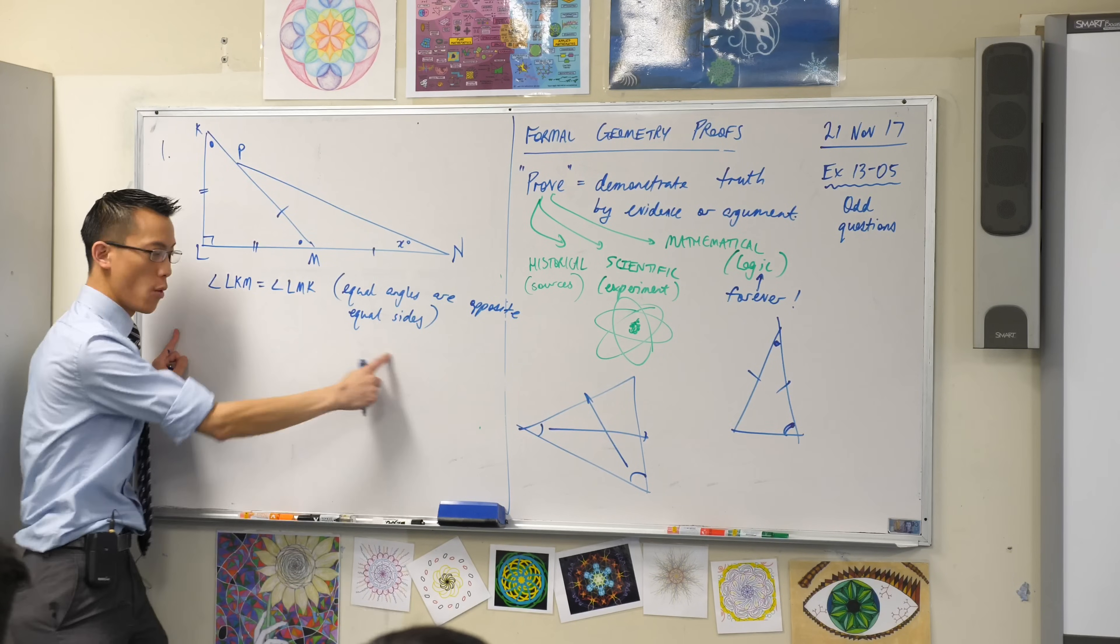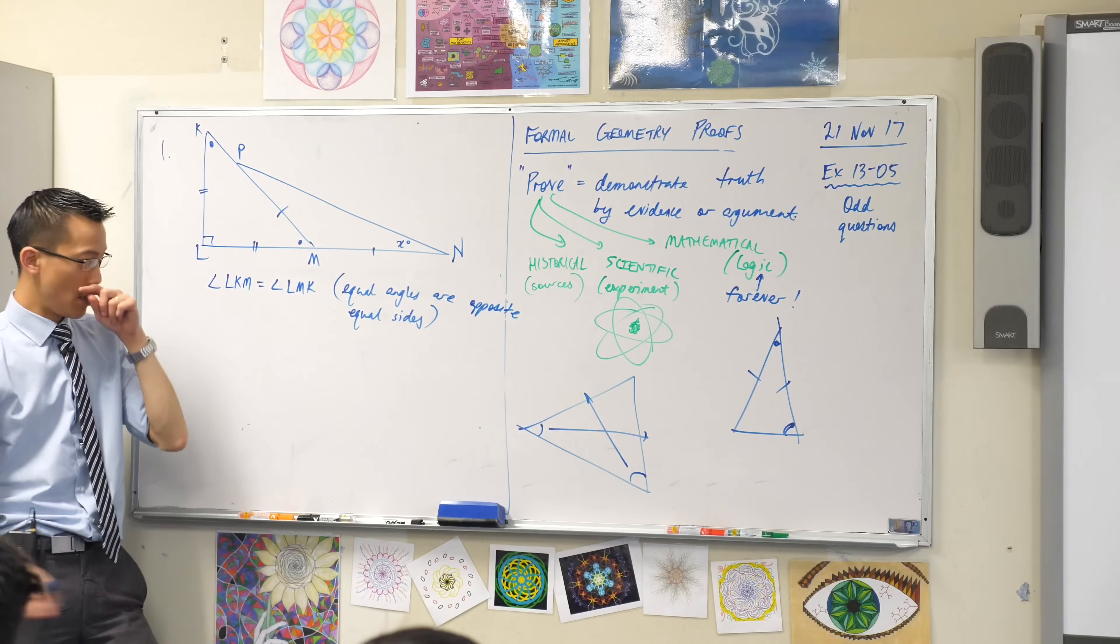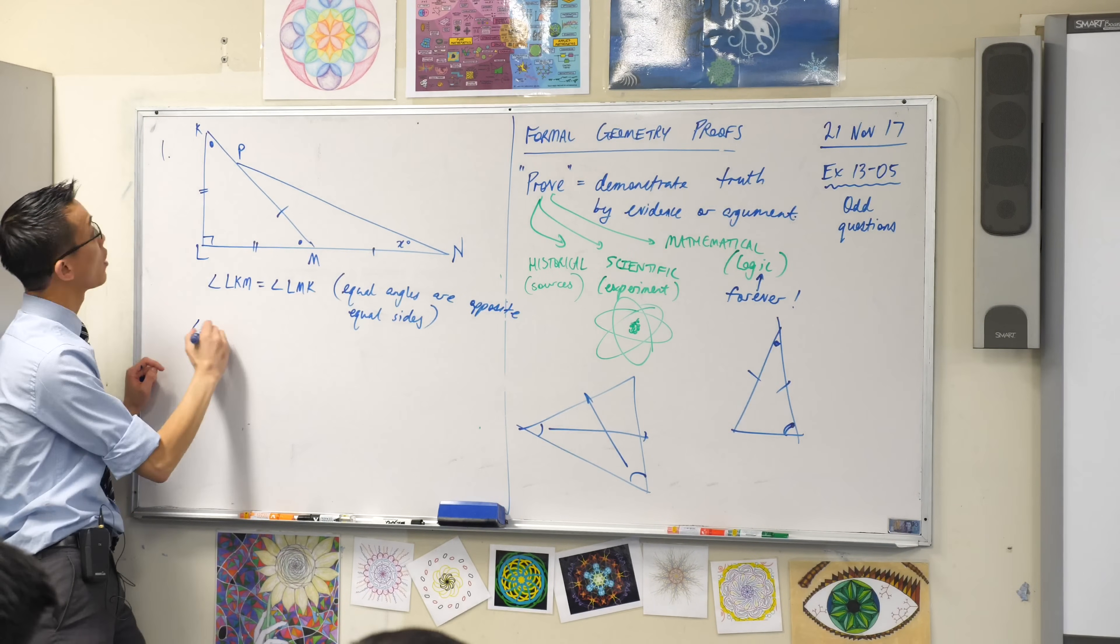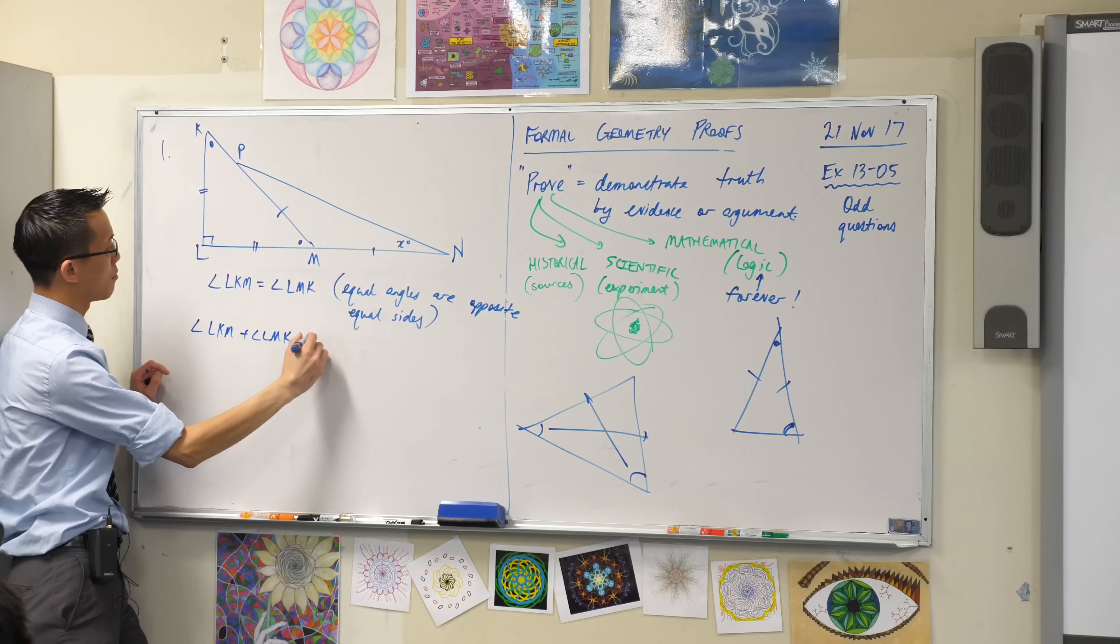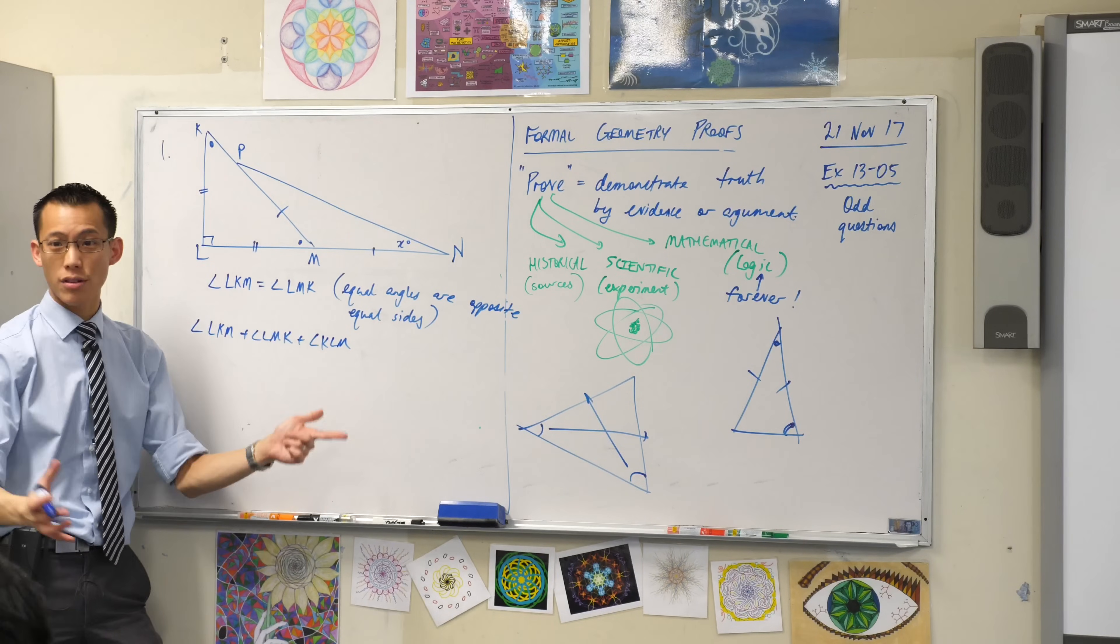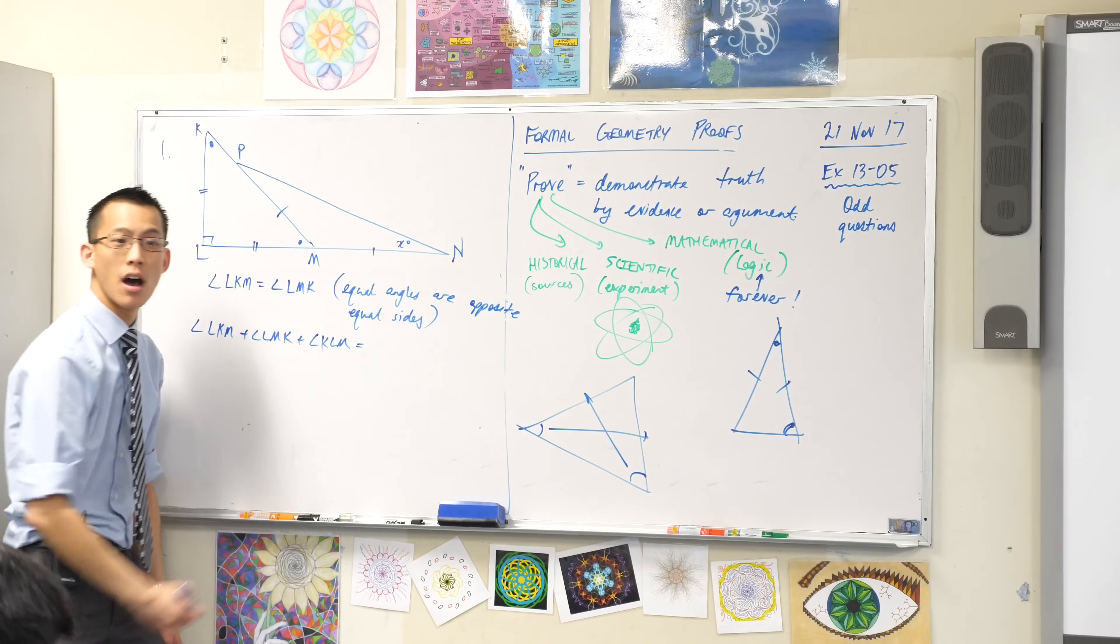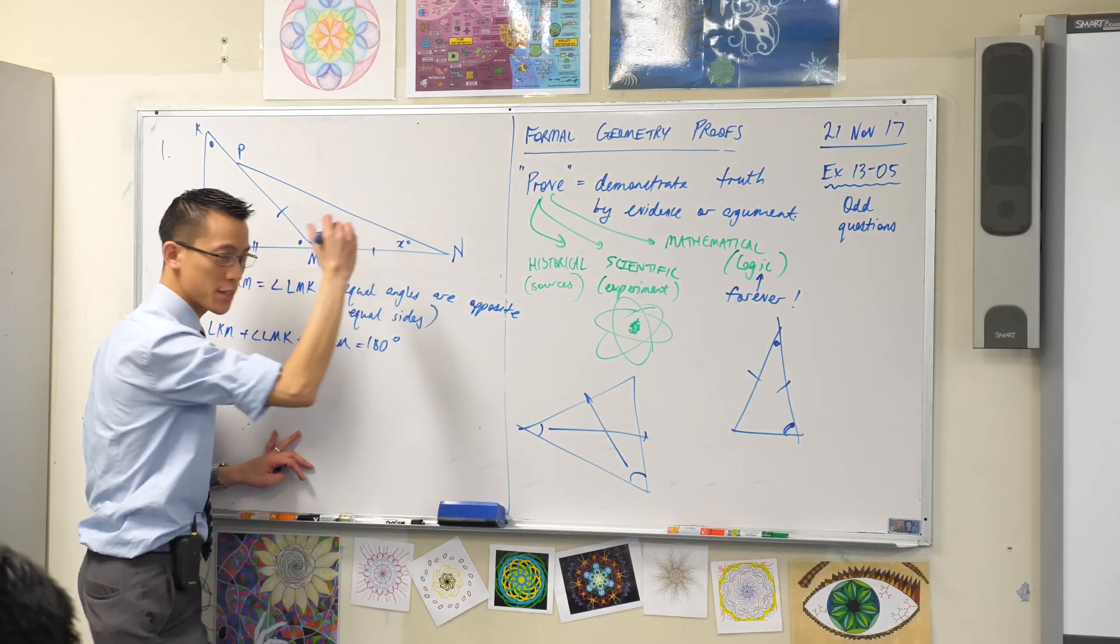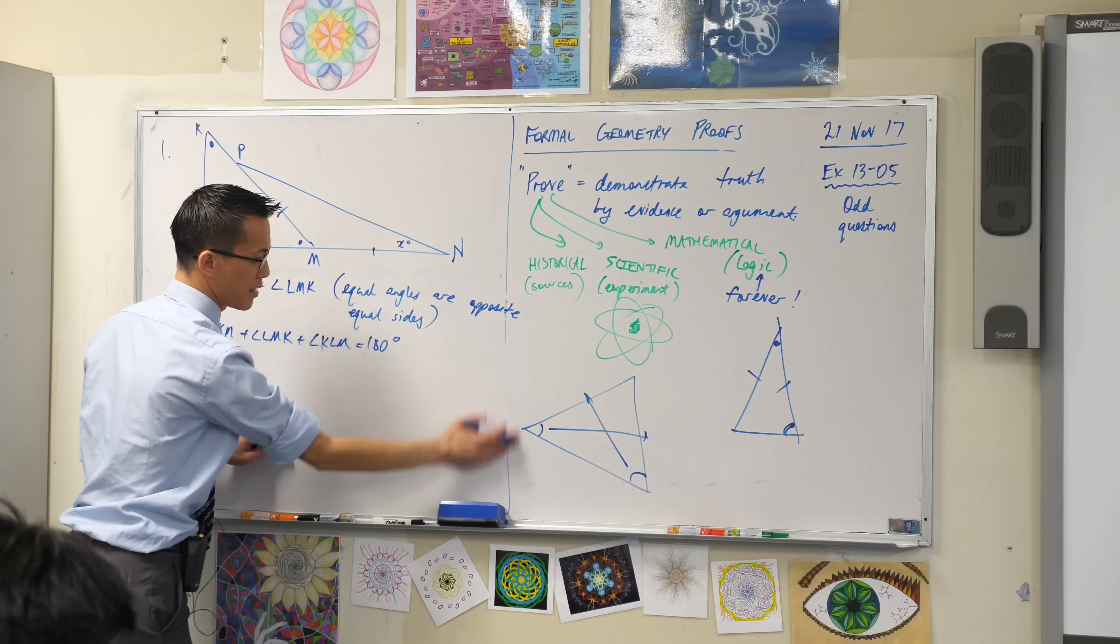Now this is really important. We're going to produce a statement here to argue this. It's about the angle sum of the triangle. So what I want to put in this next line is a sum of angles. So I'm going to go LKM plus LMK plus KLM. This is literally the angle sum of the triangle because I've got every single one and I've added them up. That is what an angle sum is after all. It's equal to 180. Don't forget to put degrees.